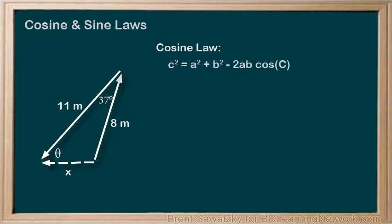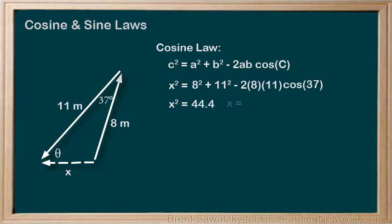To align our sides with the cosine law, well, x is our c, and a and b are 8 and 11. It doesn't matter which is which. What does matter is that the angle C is across from the side c, or x in our case, 37 degrees. We can work this out to be x² = 44.4, and square rooting both sides, we get x = 6.7 meters.